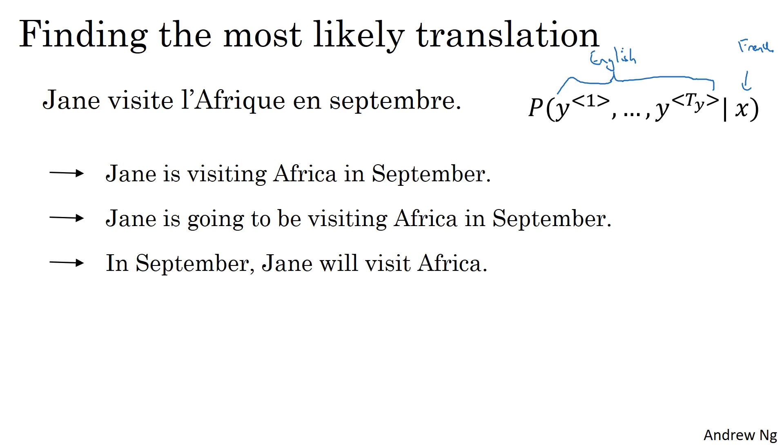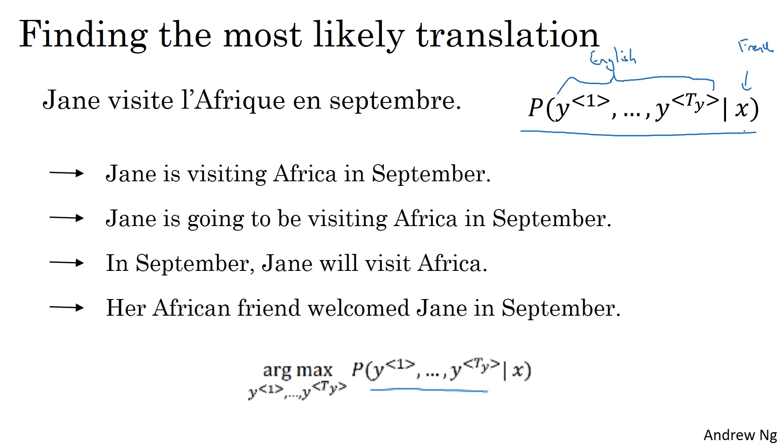but maybe another time you get a different translation, Jane is going to be visiting Africa in September, which sounds a little awkward, but it's not a terrible translation, just not the best one. And sometimes just by chance, you get others in September, Jane is visiting Africa. And maybe just by chance, sometimes you sample a really bad translation, African friend welcome Jane in September. So when you're using this model for machine translation, you're not trying to sample at random from this distribution. Instead,